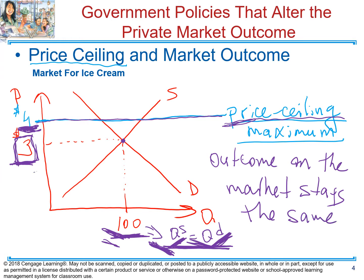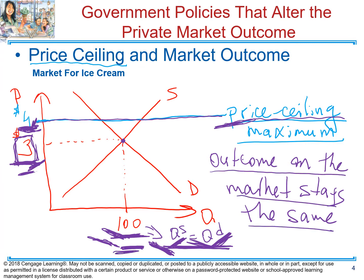Our equilibrium price is not going to change and equilibrium quantity is not going to change. They told us we cannot sell ice cream higher than four dollars, but at three dollars we already have perfect equilibrium, so we're still going to sell at three dollars. For the test or quiz: if price ceiling is imposed above the equilibrium, the outcome on the market stays the same — equilibrium quantity and equilibrium price remain unchanged.